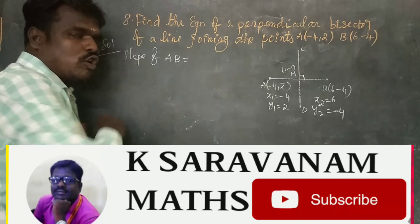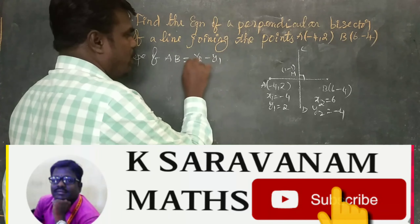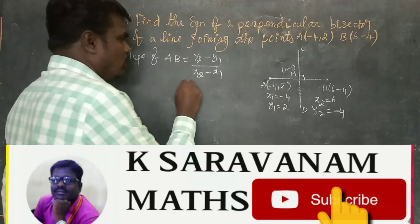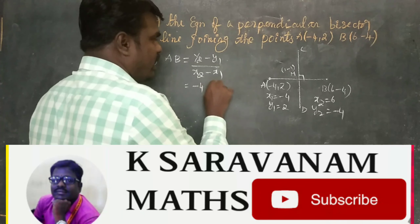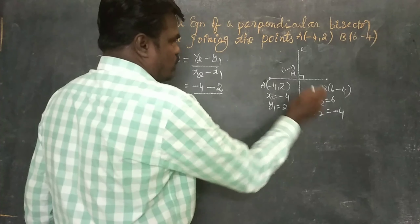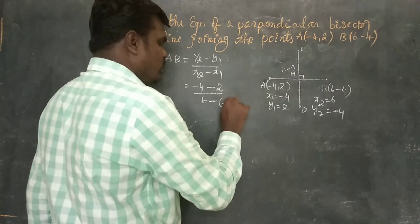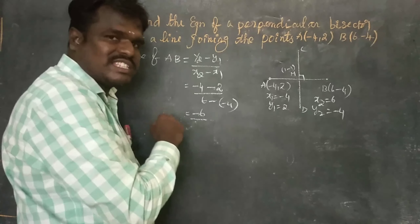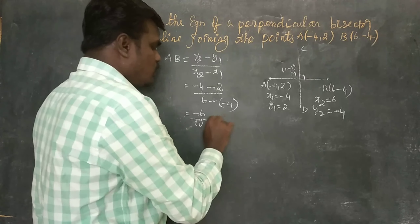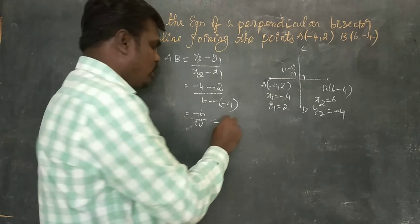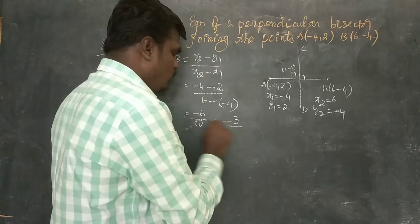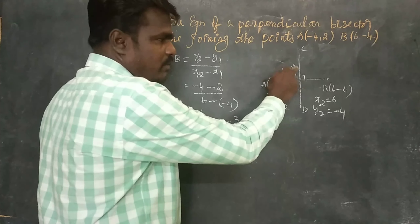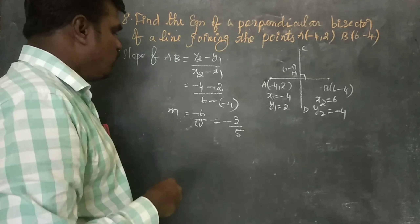Next, find the slope of AB. Using slope formula: (y2 - y1)/(x2 - x1) = (-4 - 2)/(6 - (-4)) = -6/10. Simplifying by canceling common factor 2: slope of AB = -3/5.